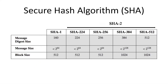MD5 is not considered secure today as the output size is small and prone to collisions. The hash function recommended by NIST today is the Secure Hash Algorithm, referred to as SHA, first published as a standard in 1995. SHA has many versions, shown in this table. SHA-1 is also not considered very strong today as the message digest is only 160 bits, only slightly larger than MD5's 128 bits.